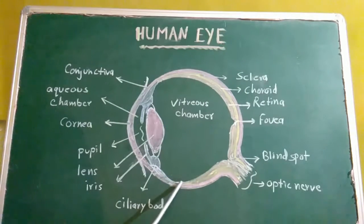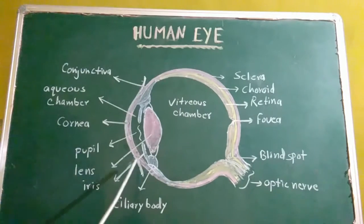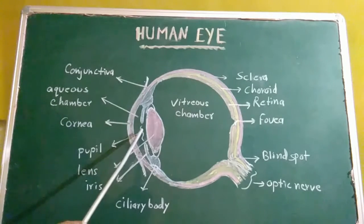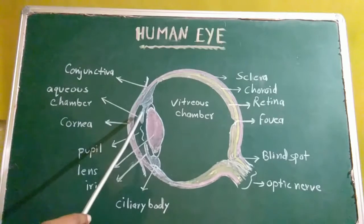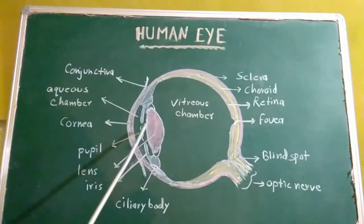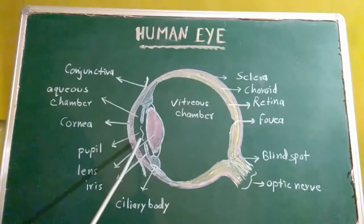At the junction of sclera and cornea, this vascular coat sharply bends to make a thin partition called the iris. The pigment present in the iris gives a particular color to the eye. There is a hole at the center of the iris called the pupil. There are two sets of muscles in iris which control the amount of light entering the eyeball by changing the size of the pupil.